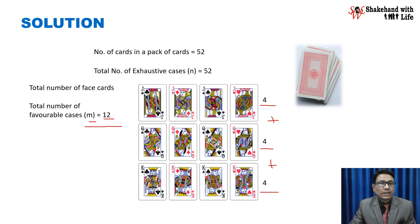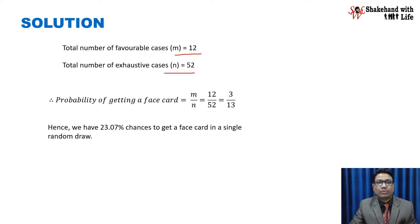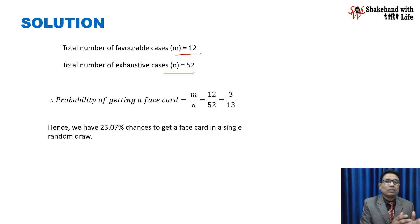What will be the probability? We have a total of 12 favourable cases and 52 exhaustive cases. Therefore the probability of getting a face card equals favourable cases divided by exhaustive cases — M divided by N. We have 12 divided by 52, which gives us 3 by 13. If we convert it to a percentage, we have a 23.07% chance of getting a face card in a single random draw.